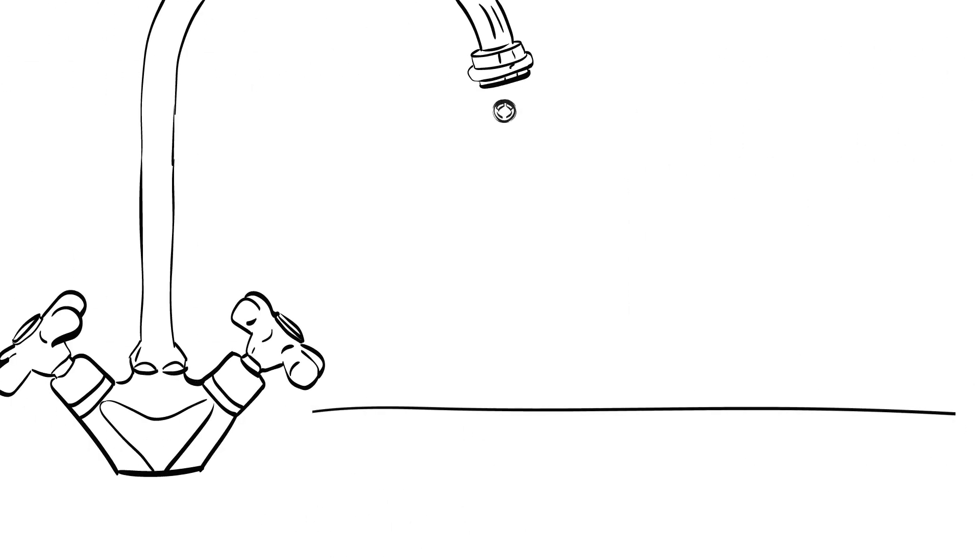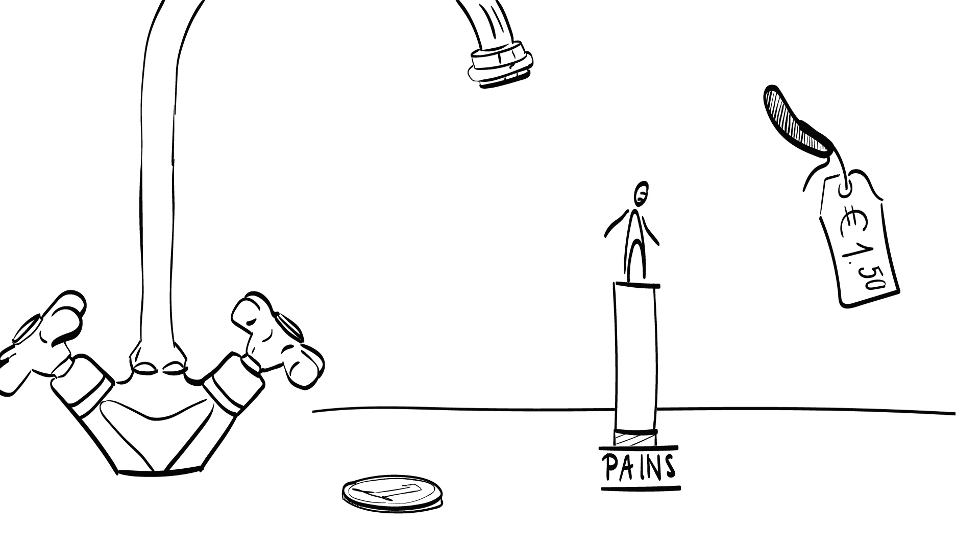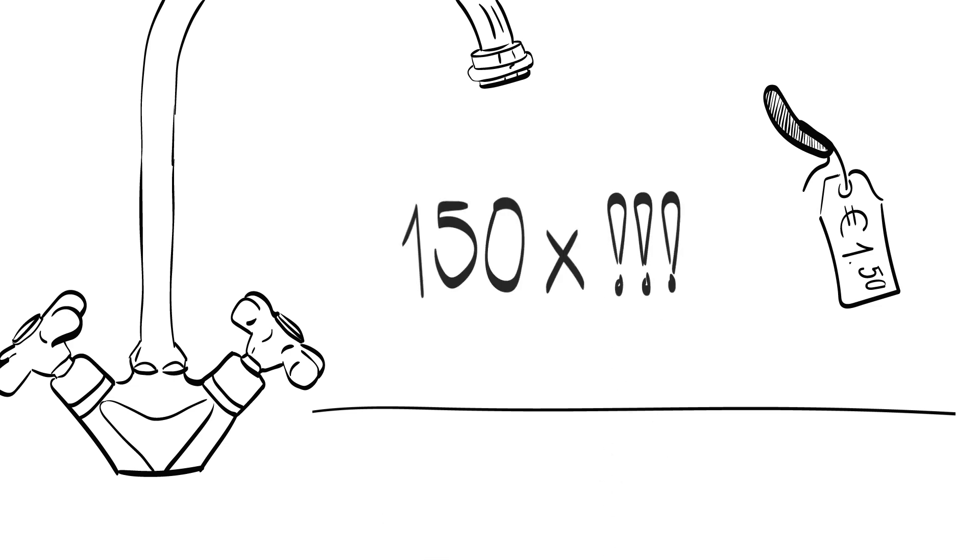For example, when you have a dripping faucet in your bathroom, you are probably very anxious to get that fixed. The cost price for that little rubber ring that you need to repair your faucet is probably one euro cent or less. However, being a customer in pain—a dripping faucet, especially during the night, is really annoying—you are more than willing to pay one euro fifty for that replacement ring. That is a hundred and fifty times the cost price.